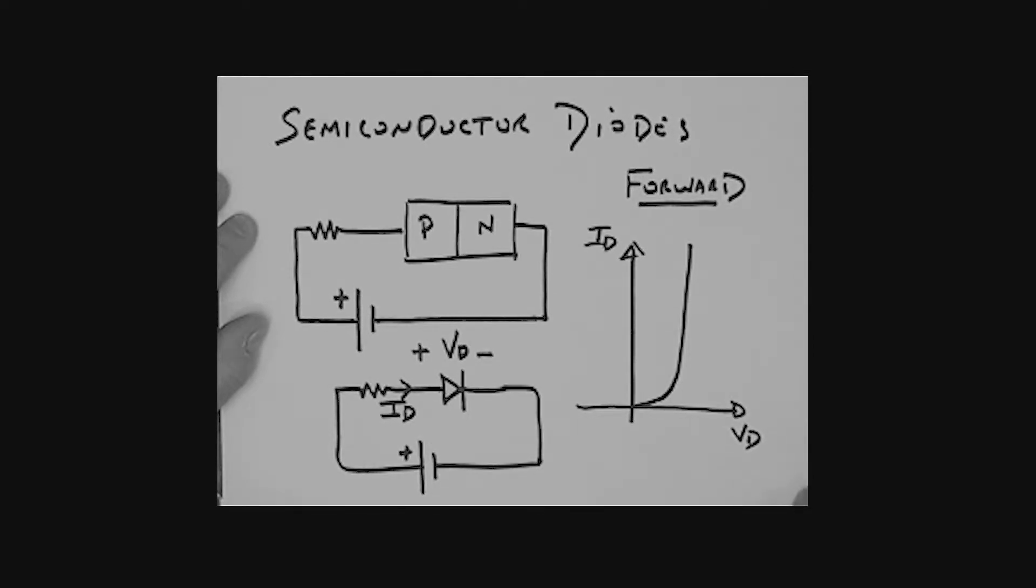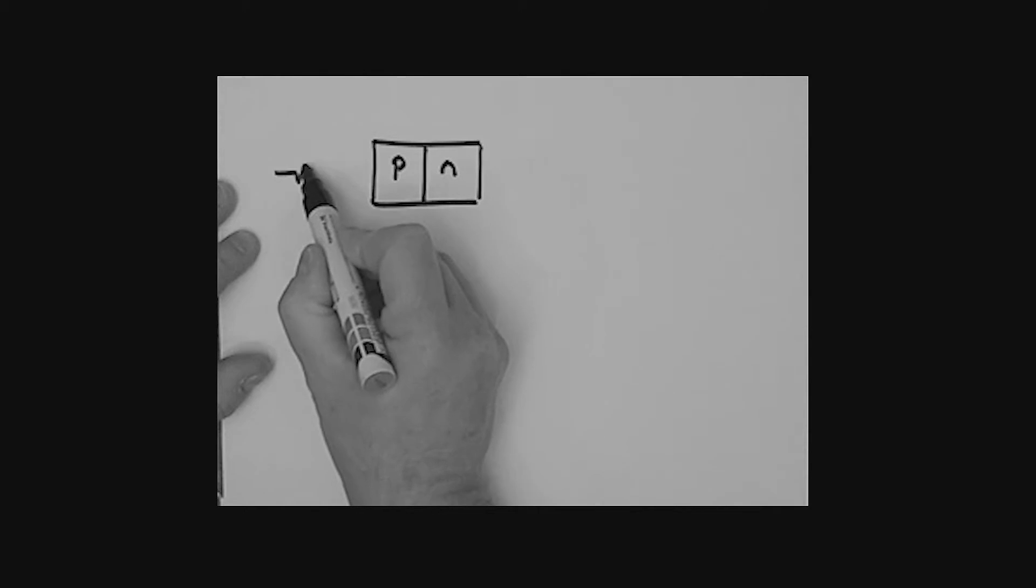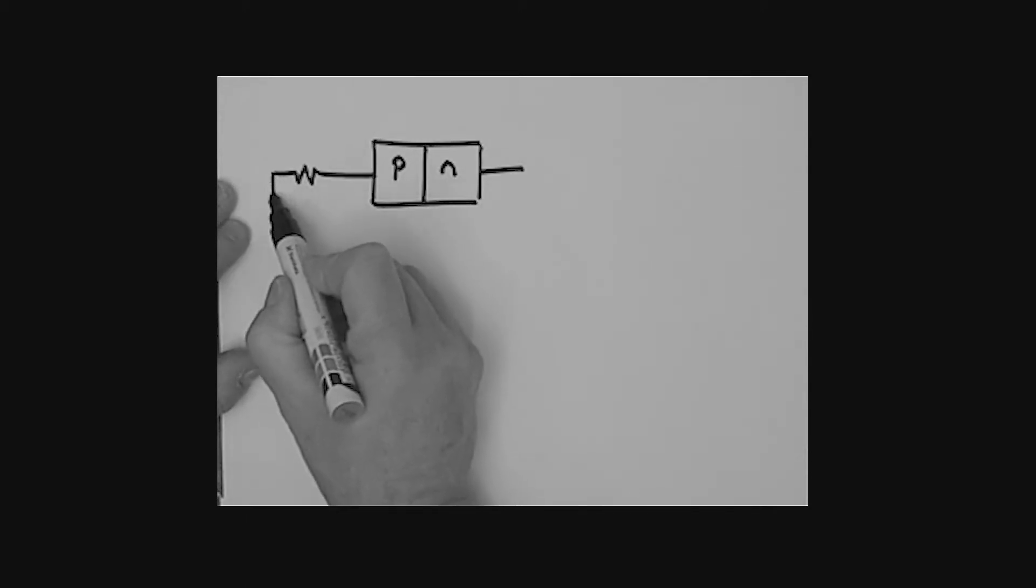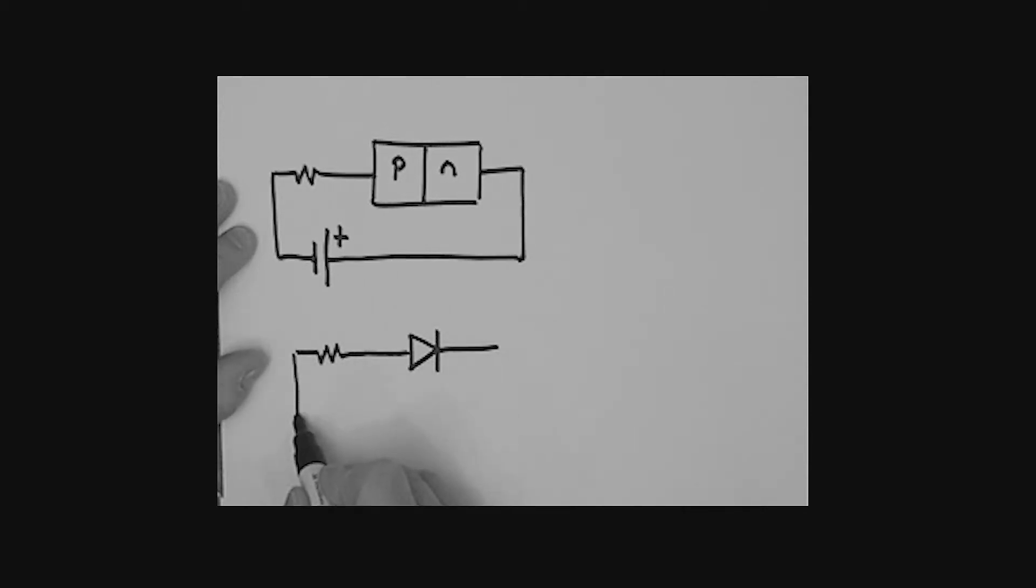Let's now look at what happens when we reverse bias the diode, when the diode effectively is not conducting. Let me draw this PN junction. Here it is, our semiconducting material, P-type, N-type. Let's once again put in that current limiting resistor. What I'm going to do this time is simply reverse the power supply. I've got the plus on this side.